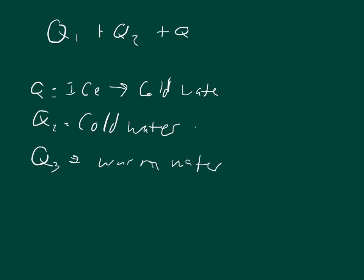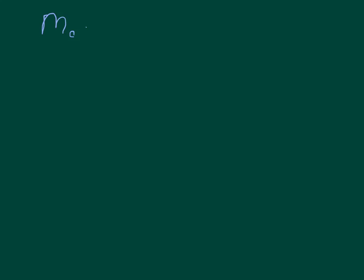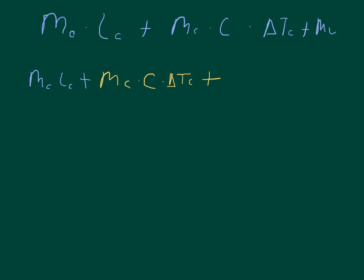Our equation is Q1 plus Q2 plus Q3 equals zero, assuming an isolated system where the sum of all heat transfers equals zero. Substituting: Q1 is the mass of the cold water times the latent heat; Q2 is the mass of the cold water times the specific heat of water times the change of temperature of the cold water; and Q3 is the mass of the warm water times the specific heat of water times the change of temperature of the warm water.